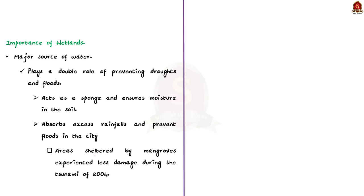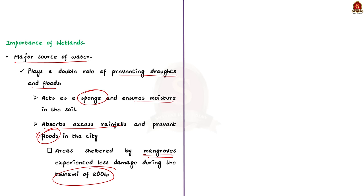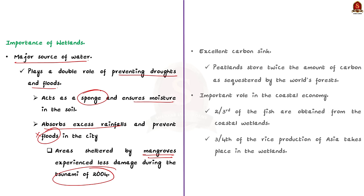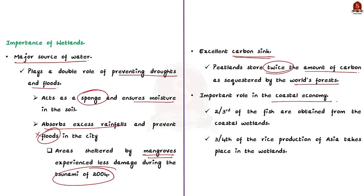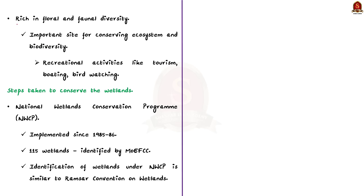Now let us understand the importance of wetlands. Firstly, wetlands are a major source of water for many people, especially in urban areas. They play a double role of preventing droughts and floods — wetlands act as a sponge, ensure moisture in the soil, and absorb excess rainfall to prevent floods. For example, areas sheltered by mangroves experienced less damage during the tsunami of 2004. Secondly, they act as excellent carbon sinks. Studies show that peatlands can store twice the amount of carbon stored by the world's forests. Thirdly, wetlands play an important role in the coastal economy — two-thirds of fish are obtained from coastal wetlands and three-fourths of rice production takes place in wetlands, ensuring food and income security. Fourthly, wetlands are rich in floral and faunal diversity, acting as important sites for conserving ecosystems and biodiversity.